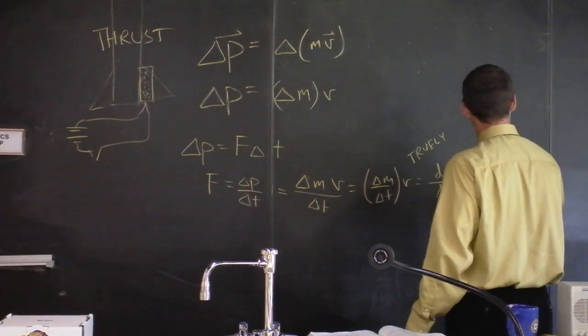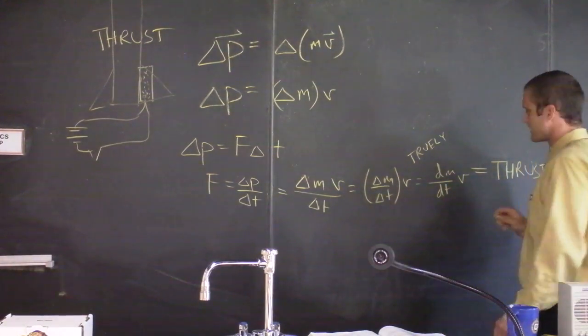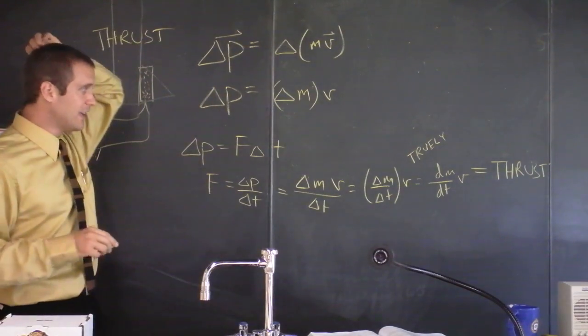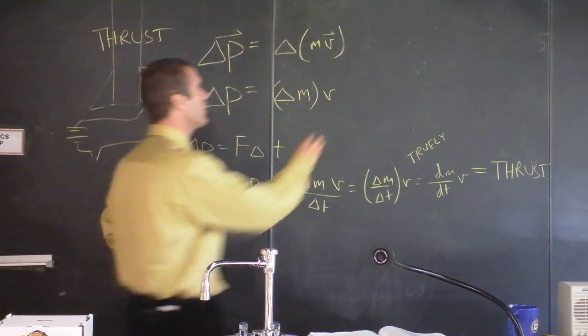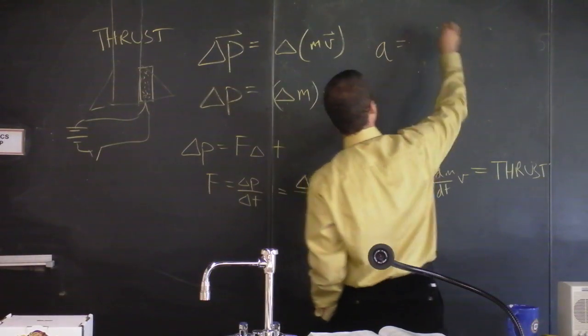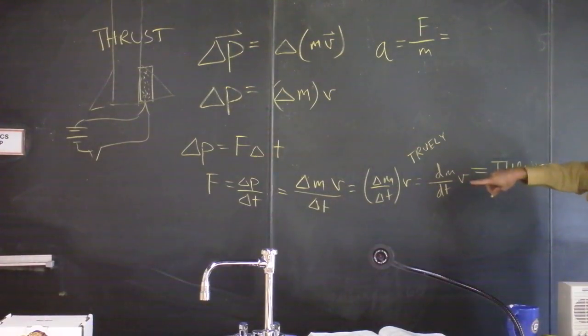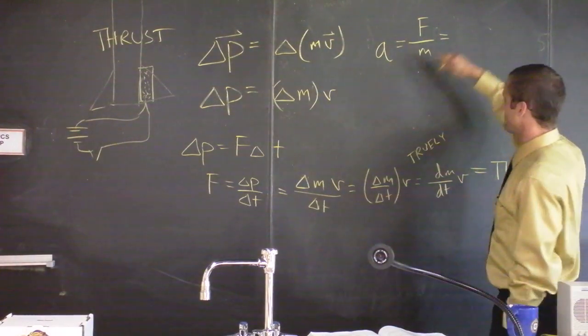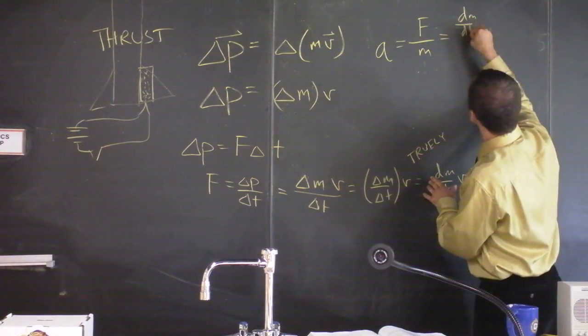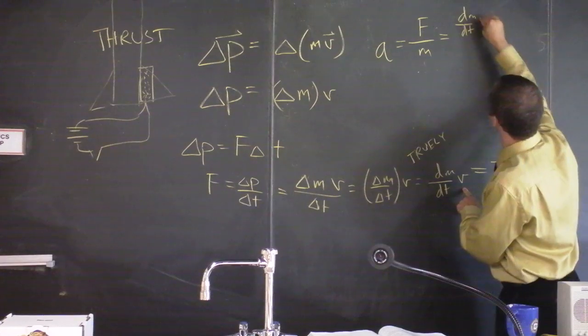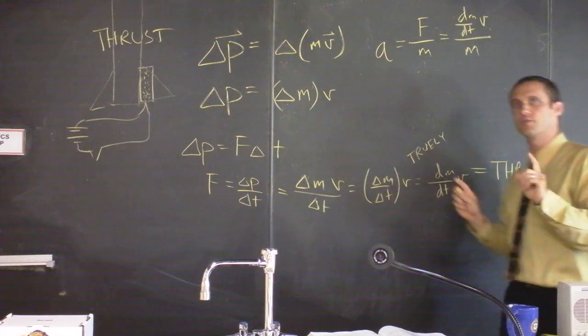Anyway, I'd like you to consider this. The interesting thing about this is that you know acceleration is force divided by mass. So if we plug this in right here, we're going to say that the acceleration is this force, which is dm dt times the velocity divided by the mass. Notice that as time goes on,